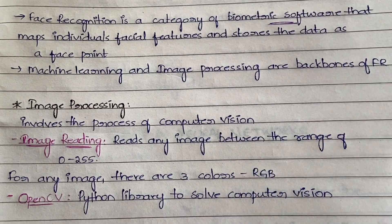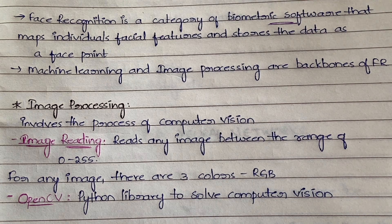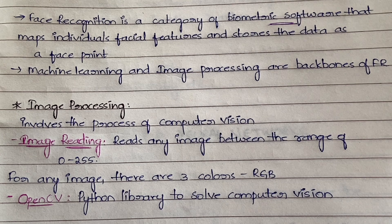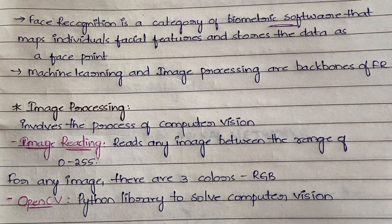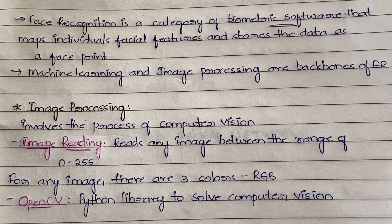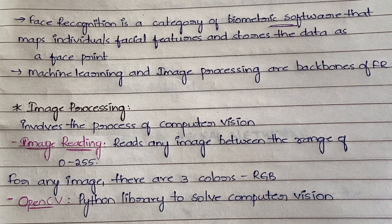Image processing involves the process of computer vision — it processes the image. There are two sub-headings: image reading and OpenCV. Image reading means it will read any image, which is represented in the range of 0 to 255 pixels. For any image there are three colors — RGB: red, green, and blue. All other colors are combinations originating from these three. Image reading identifies colors, dimensions, and all properties of the image.